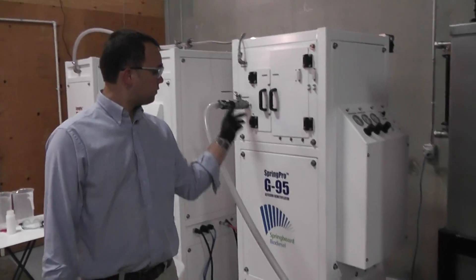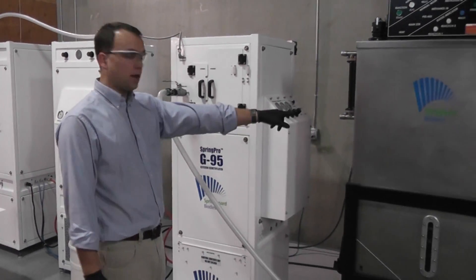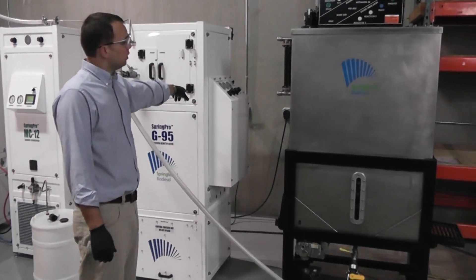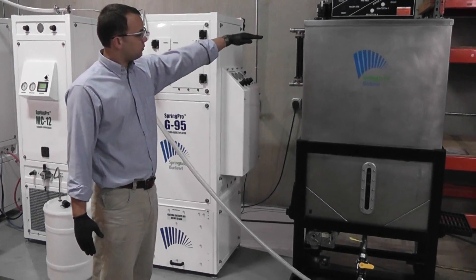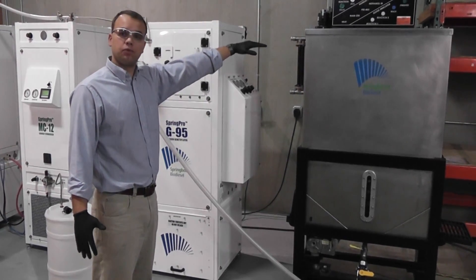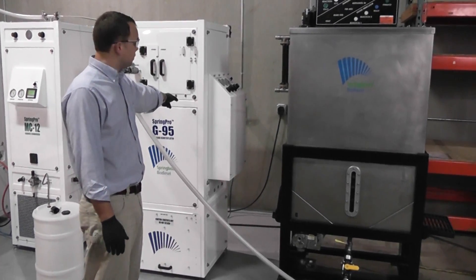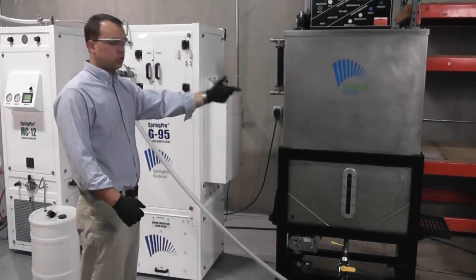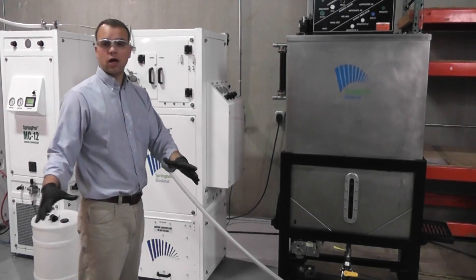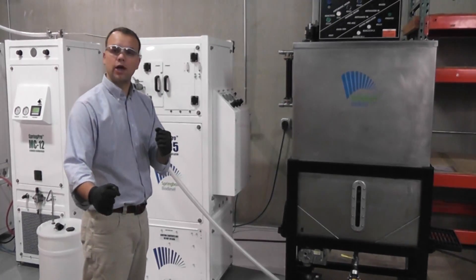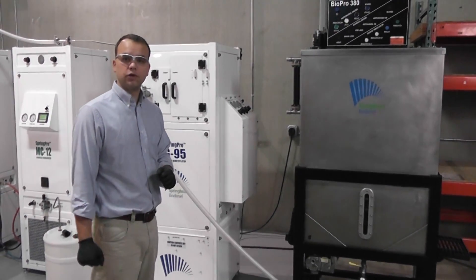So when I open these valves, this will draw the glycerin out of the 380 into this machine. In this case, we have enough fluid pressure on our 380 to pretty much push all the glycerin into the G95. But the G95 will also vacuum the glycerin through that hose. So we could be drawing out of a barrel, or a tote, or any other vessel that you might have glycerin in.